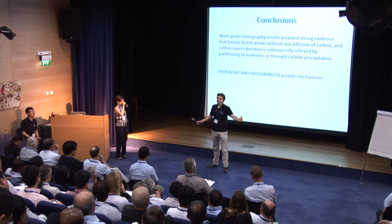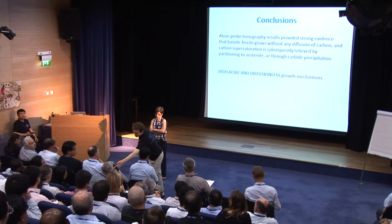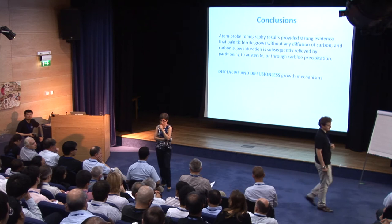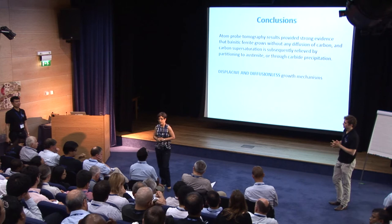Question: You talked about dislocations accumulating in the retained austenite. Is there any work being done on whether slip can transmit from the austenite back into the ferrite? Are those interfaces opaque or transparent to glide? Answer: Those dislocations are generated by plastic accommodation of the retained austenite during the bainite reaction. But if we think about the crystallographic match between the bainite ferrite and the parent retained austenite, we have some possible plane matches that give us the idea that those dislocations can be transferred from the retained austenite to the bainite ferrite.